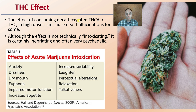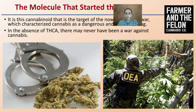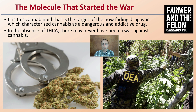When THCA is decarboxylated, it goes to the delta-9-THC that many people are familiar with. This is the molecule that started the drug war — it is the cannabinoid that is the target of the now-fading drug war, which characterized cannabis as a dangerous and addictive drug.